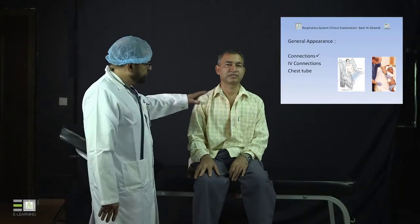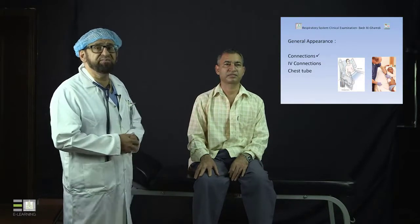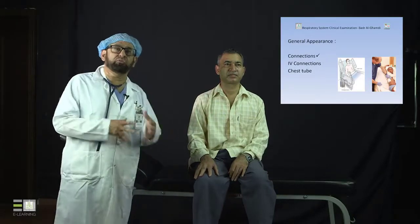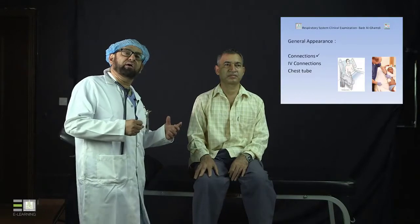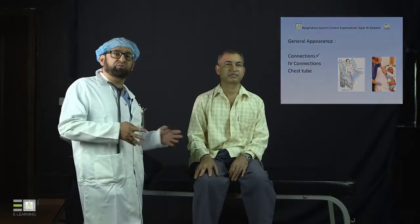Since we are speaking about the respiratory system, some respiratory patients will also be connected to what we call a chest tube, as you see it in the slide. The chest tube is usually going through either the right or left side of the patient, with the tube going inside the chest wall. That's why it's called a thoracotomy tube, or simply a chest tube. If you see that, you have to comment on it — you can say my patient is connected to a chest tube.